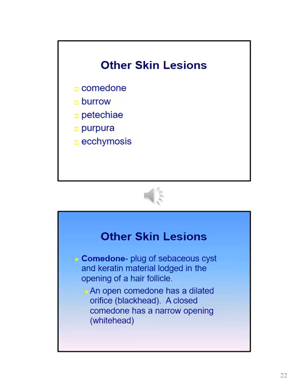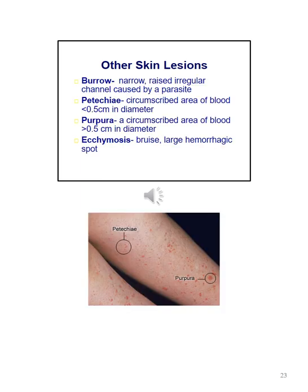Other types of skin lesions include comedone, burrow, petechia, purpura, and ecchymosis. A comedone is a plug of sebaceous cysts and keratinized material lodged in the opening of a hair follicle. An open comedone has a dilated orifice and is called a blackhead; a closed comedone has a narrow opening and is called a whitehead. A burrow is a narrow, raised, irregular channel caused by a parasite. Petechia is a circumscribed area of blood less than 0.5 cm in diameter. Ecchymosis is another name for bruise and is a large hemorrhagic spot.